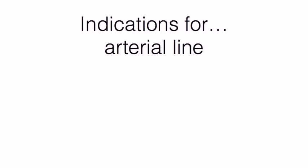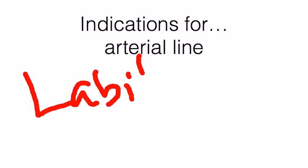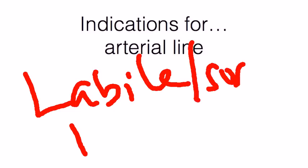The next one is labile or even suspect BP or oxygenation. Labile or suspect means it doesn't fit the clinical picture like I mentioned earlier. Or you titrate the vasopressor a little bit down and the blood pressure plummets, or you increase it slightly and the blood pressure rises way more than you expect.